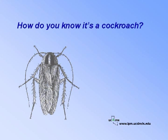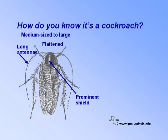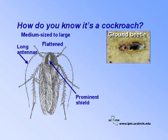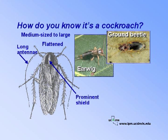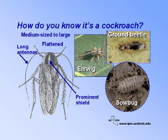How do you know it's a cockroach? Cockroaches are medium-sized to large insects. They appear to be somewhat flattened and have long antennae and a very prominent shield-shaped section behind the head called a pronotum. Cockroaches are often confused with predatory beetles like ground beetles, but adults have membranous wings instead of the thick, hardened wings of beetles. Cockroaches may sometimes also be confused with other commonly seen invaders, such as earwigs and sow bugs or pill bugs.